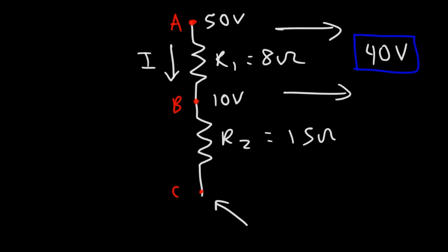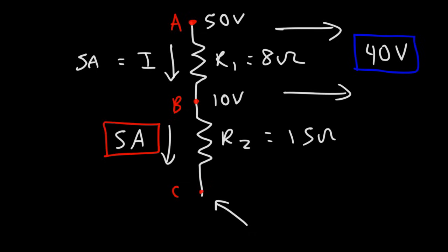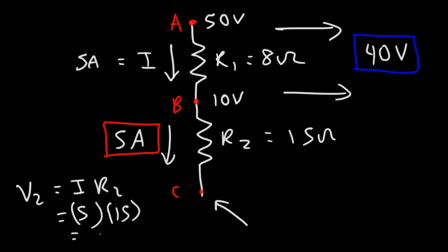Since 5 amps flows through R1, the same current flows through R2. V2 equals I times R2: 5 amps times 15 ohms equals 75 volts. That is the voltage drop across R2.